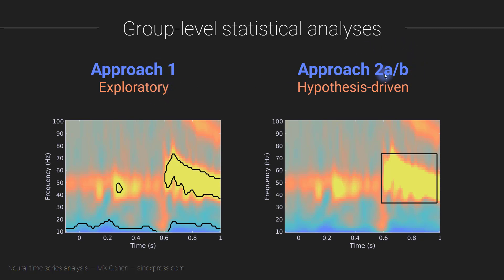Approach 2A and 2B is more oriented towards hypothesis-driven analyses. This would be the case where you have a very strong theory or a priori motivation based on some prior data, based on a theoretical framework, where you have a hard constraint that tells you which frequencies are the most relevant and which time windows are the most relevant.